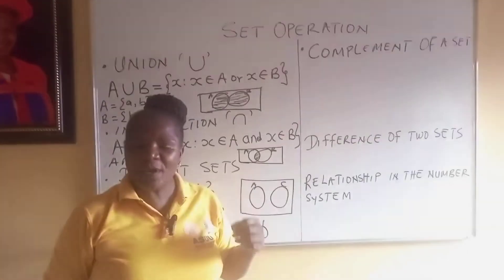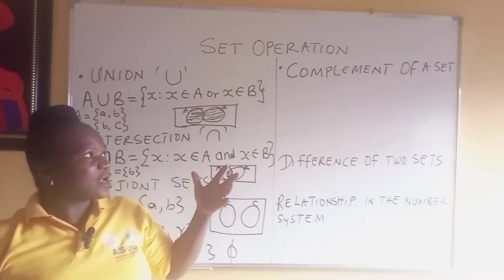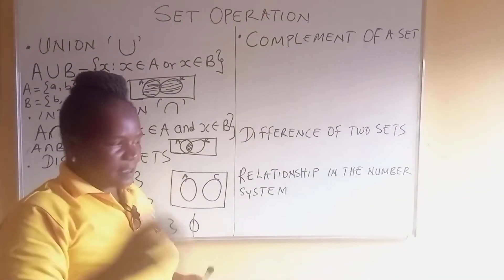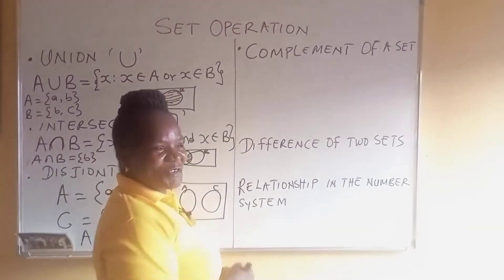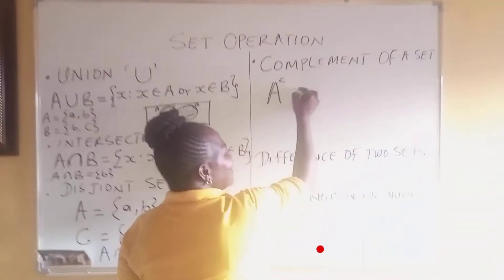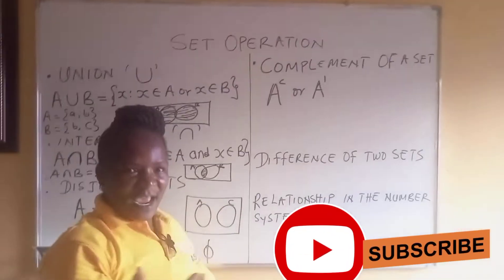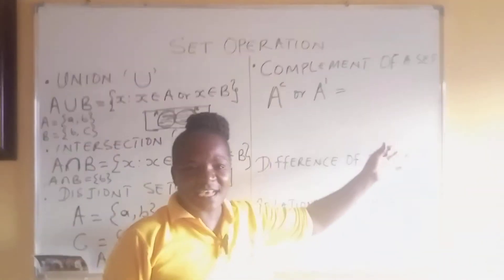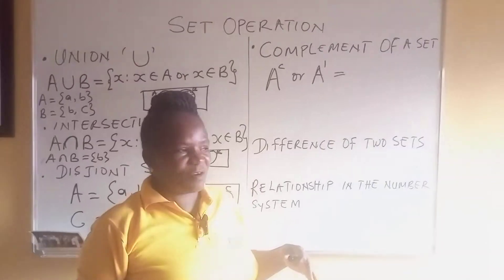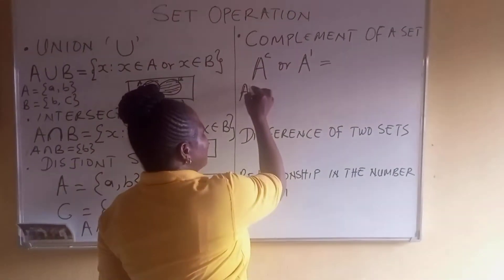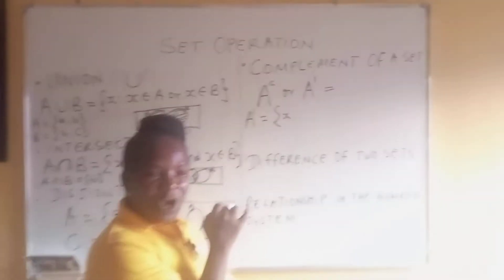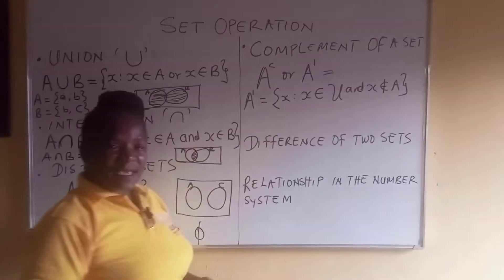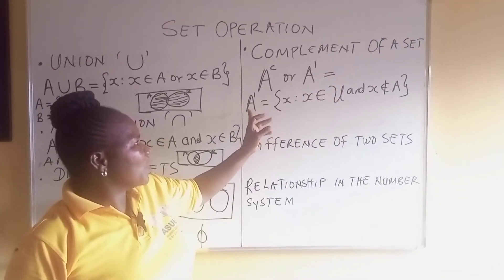Now we talk about the complement of a set. You talk about the complement of a set in relation to the universal set. The complement of a set, denoted as A' or A complement, is equal to those elements in the universal set that are not in set A. Mathematically, A complement equals the set of X such that X is in the universal set and X is not in A.